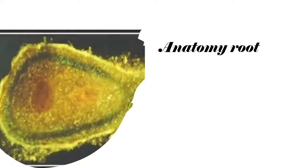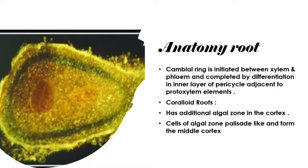Anatomy of root, as observed in the diagram: a cambial ring is initiated between the xylem and phloem and completed by differentiation of the inner layer of pericycle adjacent to the protoxylem elements. Cells of the algal zone are palisade-like and form the middle cortex.